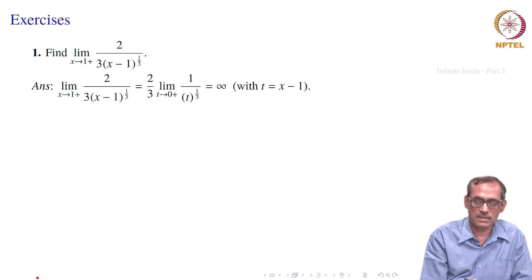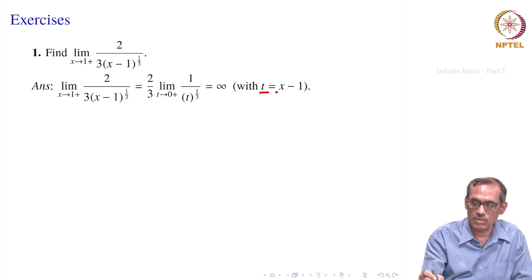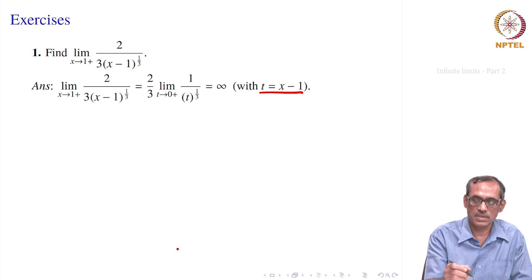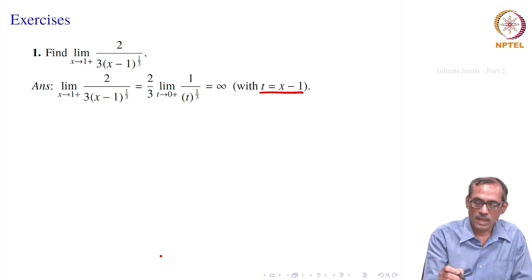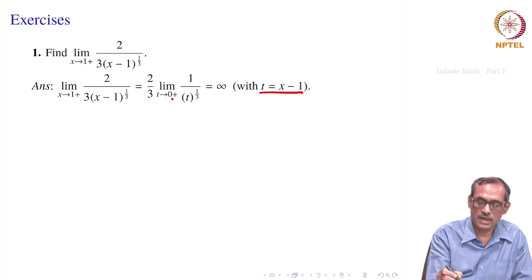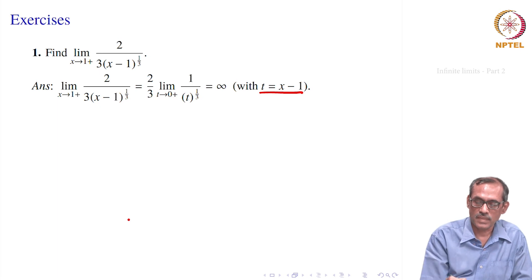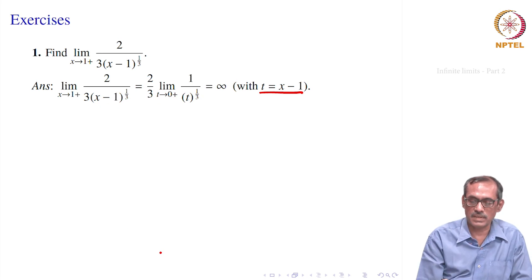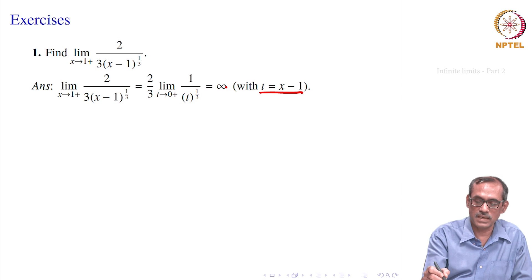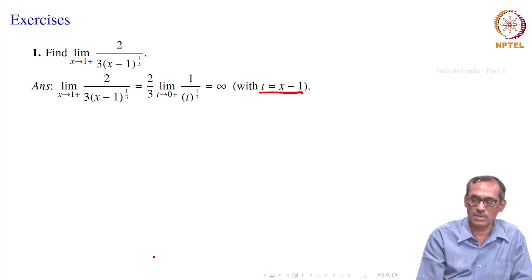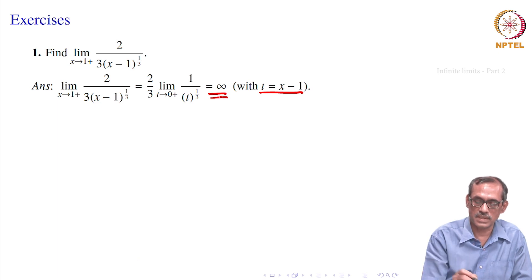For the limit as x → 1+, we substitute t = x - 1. Since x > 1, t is positive and goes to 0+. The expression becomes (2/3) times the limit as t → 0+ of 1/t^(1/3). We know 1/t^(1/3) goes to infinity as t → 0+, so the result is infinity.